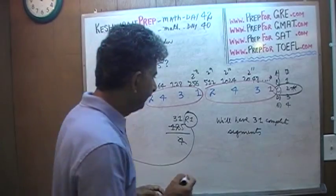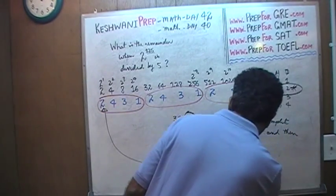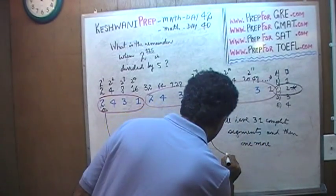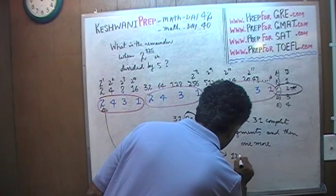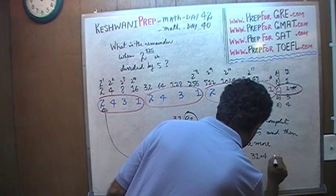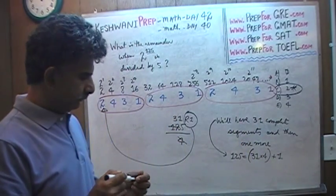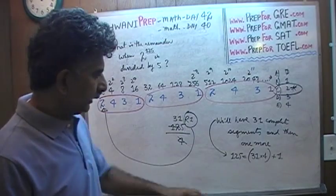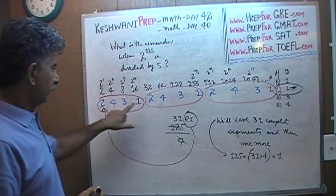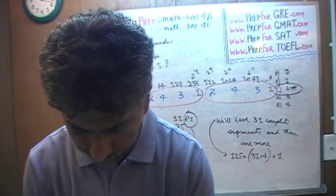The remainder is 2. We have 31 complete segments and then 1 more — because 125 equals 31 times 4, plus 1. That extra 1 tells us we end up at the first position of the pattern, which gives a remainder of 2. That's all there was to this problem.